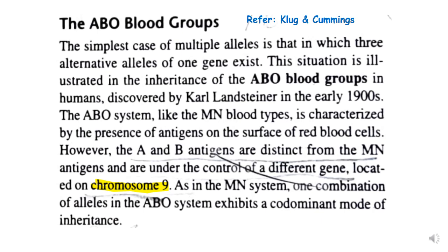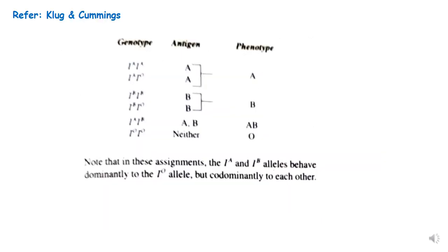In the ABO system, both A and B alleles are co-dominant with each other, but they are dominant over the O allele. The possible genotypes are: for blood group A — IAIA or IAIO; for blood group B — IBIB or IBIO; for blood group AB — IAIB, which is the only possible genotype; and for blood group O — IOIO, where none of the antigens is expressed.